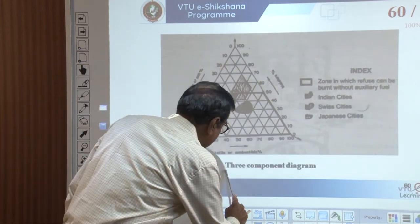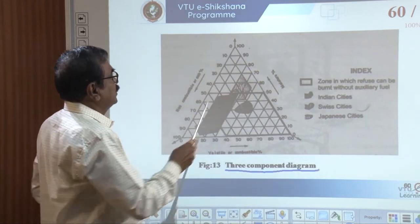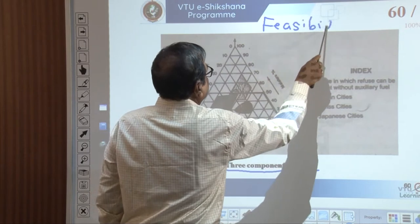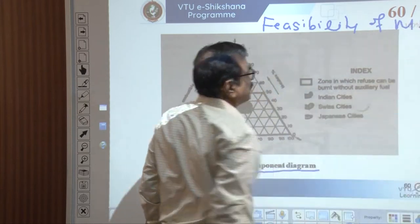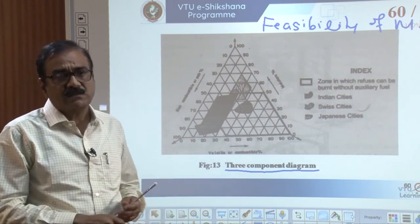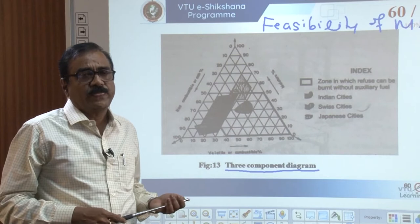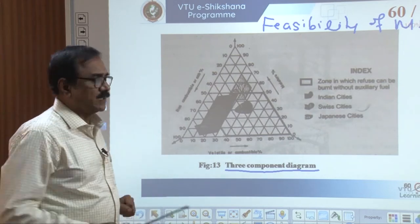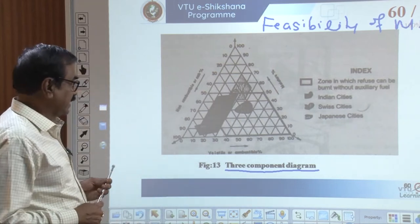This is known as the three-component diagram — the title should be 'Feasibility of Municipal Solid Waste for the Combustion Process.' Whatever commingled waste we want to subject to incineration, a feasibility study is very important. This is generally studied using what is known as the three-component diagram, which is a triangular diagram.